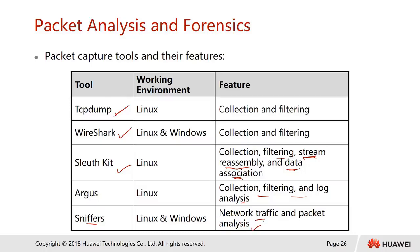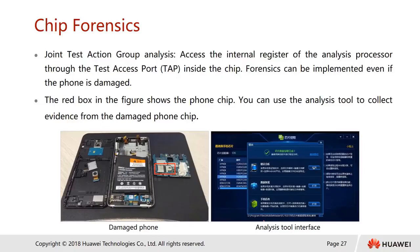Chip forensics uses JTAG (Joint Test Action Group) analysis to access the internal registers of a processor through the test access port inside the chip. Forensics can be implemented even if the phone is damaged — investigators can go in through the chip and try to recover information. The forensic analysis tool can collect evidence from a damaged phone chip.